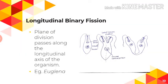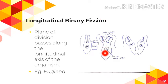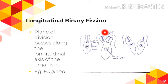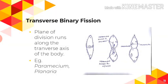In longitudinal binary fission, the plane of division passes through the longitudinal axis, along the longitudinal furrow. The example here is Euglena. The parent body divides to form two daughter Euglena; the nucleus gets replicated and one nucleus is transferred to each daughter cell.